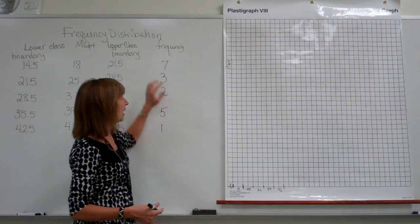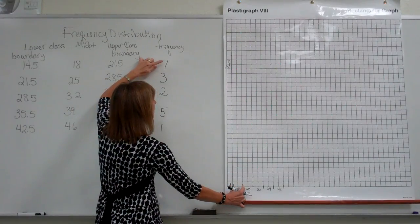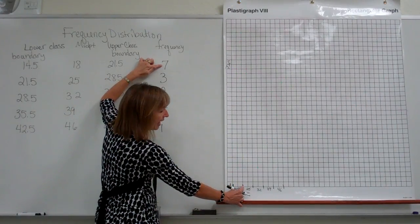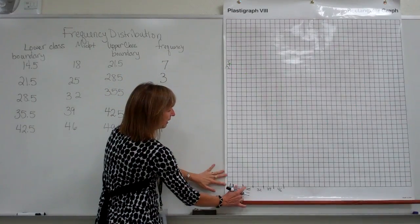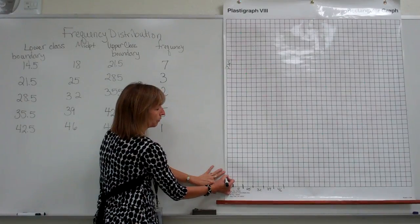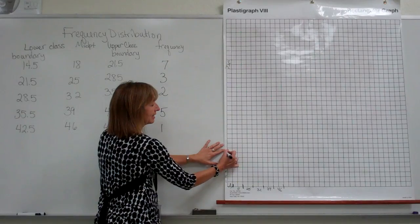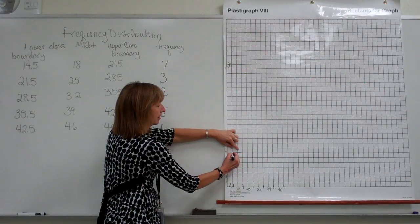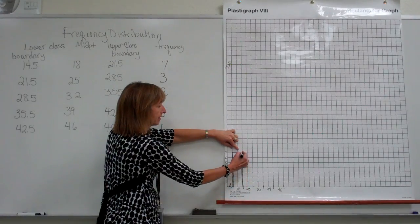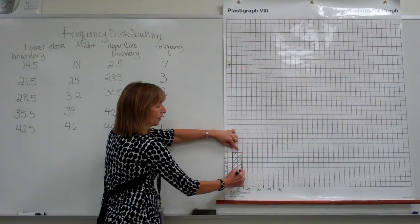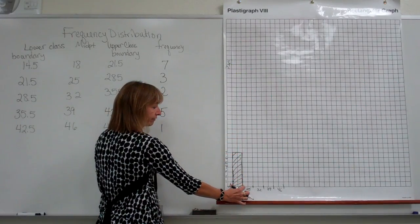Now for graphing the histogram then, we're going to go ahead and do the height of our bar above each class to be the frequency that we found for that class. So for our first class, our frequency was 7. So I'm going to take and look at the spans 1, 2, 3, 4, 5, 6, 7 for a height. And then make my bar from the beginning to the end of that first class. So here is your graph of the frequency of the data values that fell in that first class.